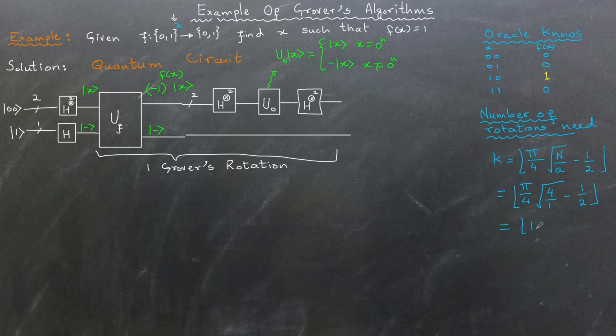Plugging these values in the formula, the result is floor of approximately 1.0707, which equals 1. This means that for our example, a single Grover rotation is sufficient. After performing this rotation, we measure the first register to find the value of x for which f(x) equals 1.